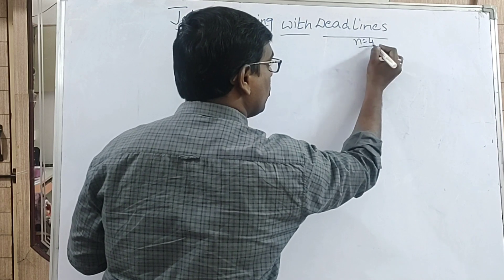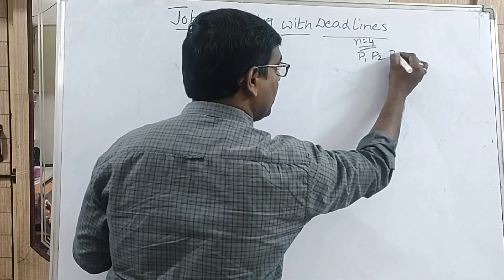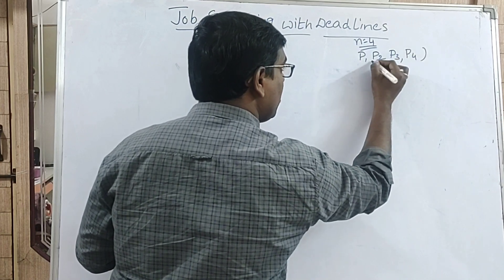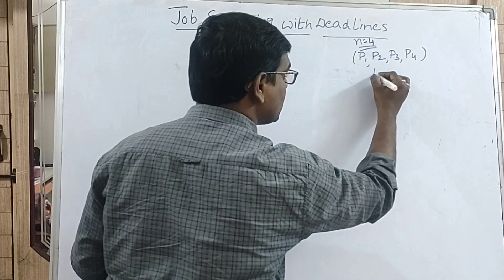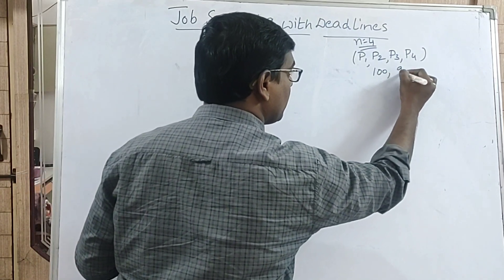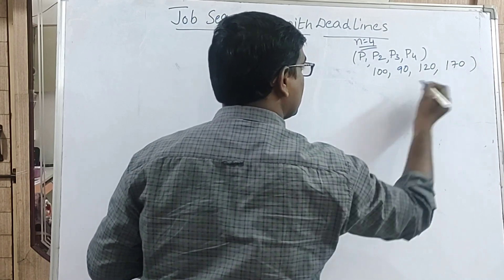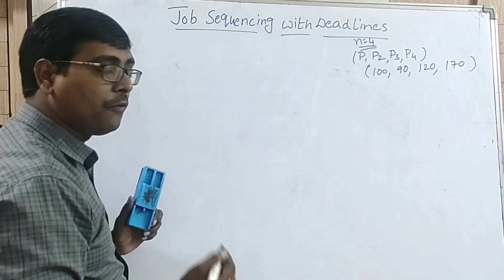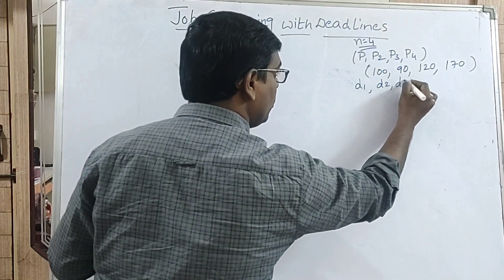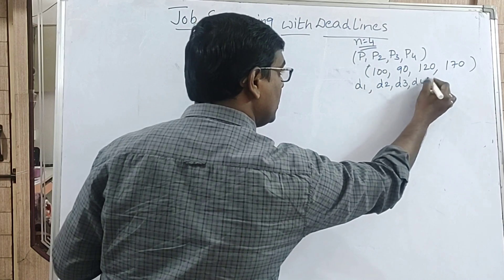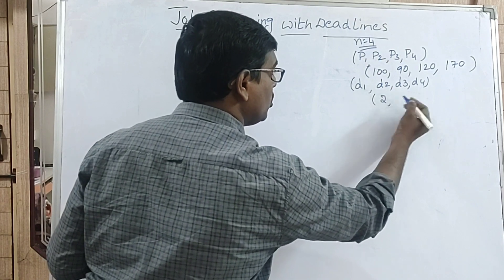Consider an example. We have four jobs, n is equal to four. P1, P2, P3, P4 are the profits of the four jobs. Assume the profits are 100, 90, 120, and 170. Coming to deadlines D1, D2, D3, D4 — assume the deadlines are 2, 3, 1, and 2.